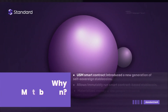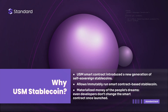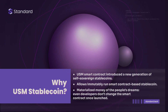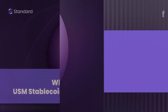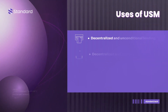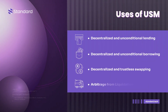Why USM stablecoin? USM smart contract introduced a new generation of self-sovereign stablecoins. It allows an immutably run smart contract-based stablecoin, and users have full control of the USM monetary system.